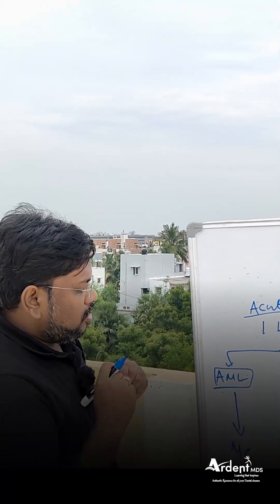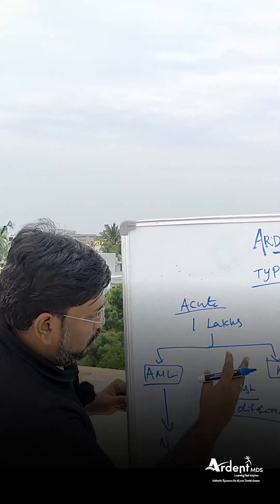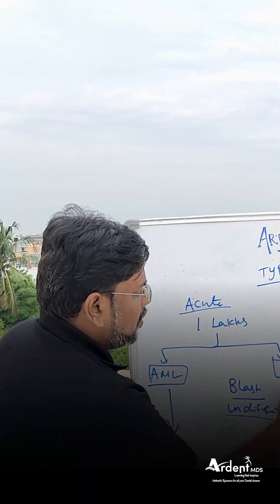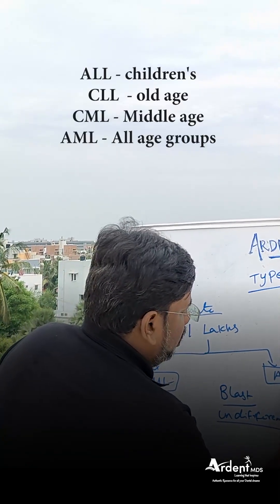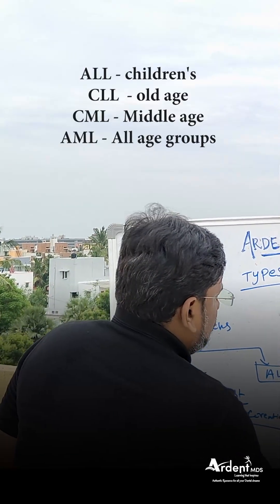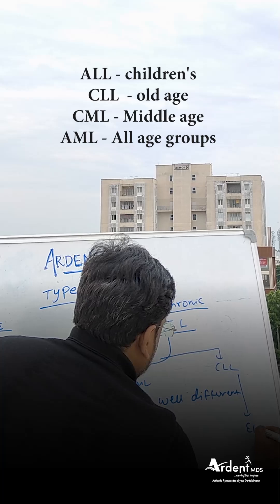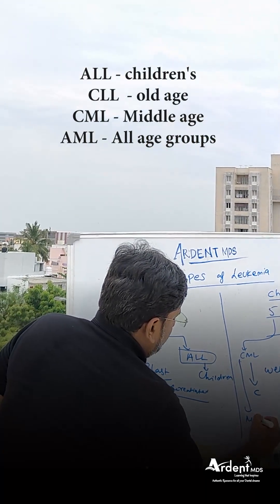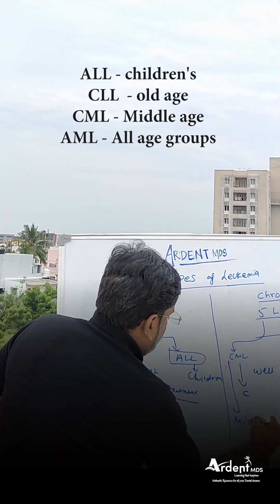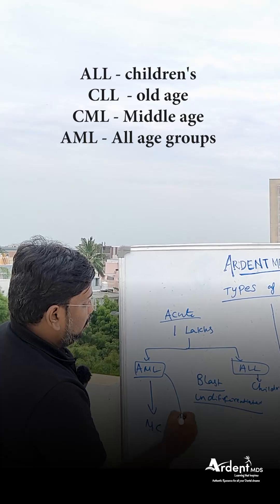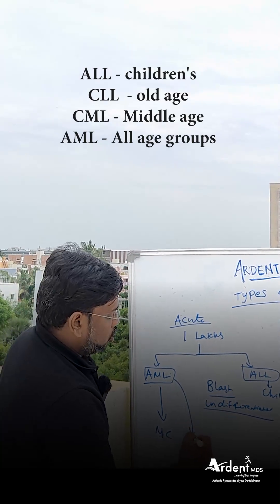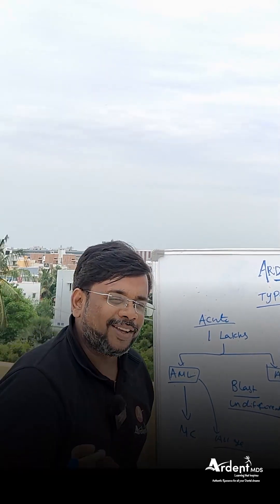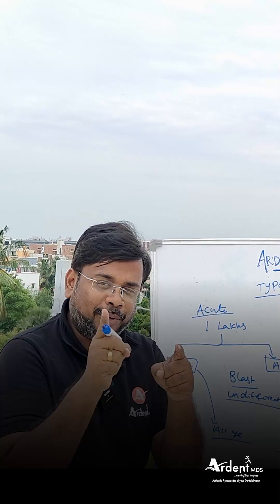Regarding age groups: ALL is more common in children; CLL is more common in the elderly; CML is more common in middle age; and AML is common in all age groups. This is the difference between acute and chronic leukemia — hope it is useful for you.